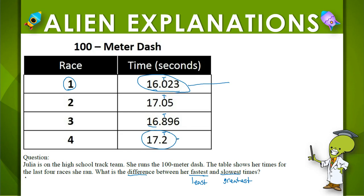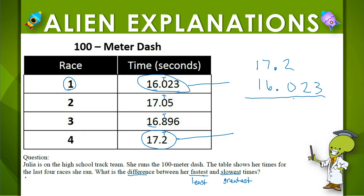It wants to know the difference between those two, so if I line up my decimal points and keep everything in line, I subtract those two values. You should be able to come up with the correct answer in finding the difference between the fastest time and the slowest time.